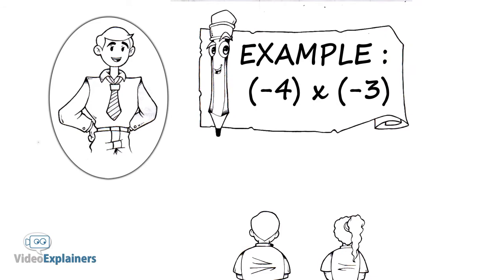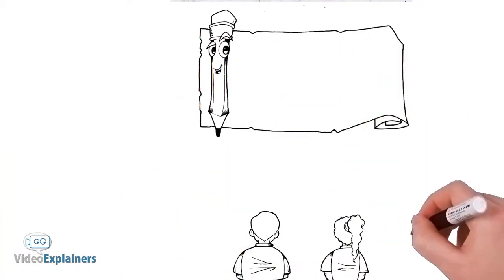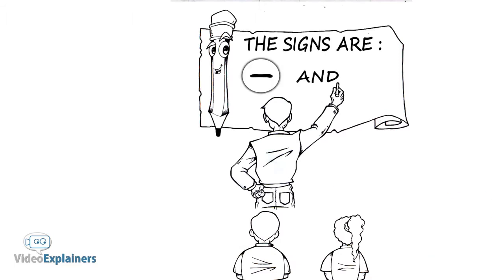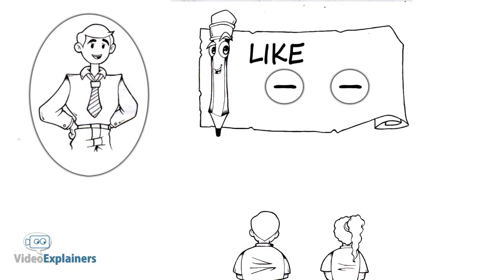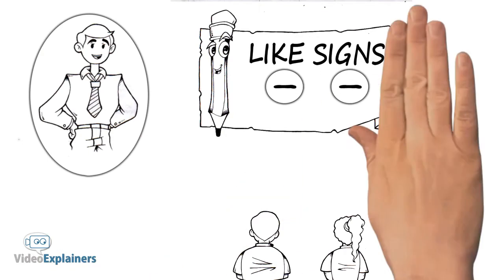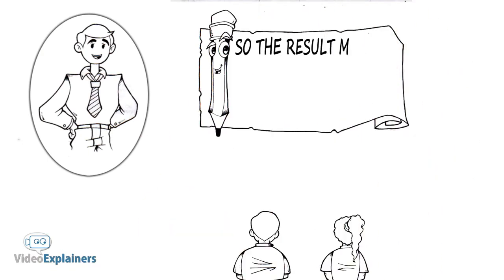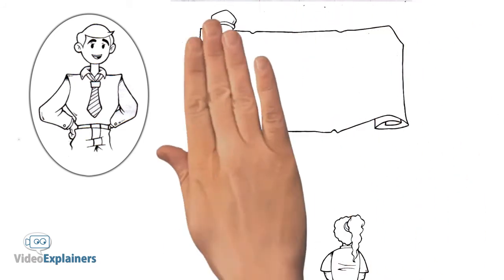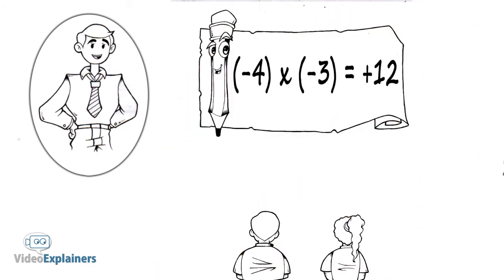Example: negative four times negative three. The signs are negative and negative. They are both negative, so they are like signs. Like each other. So the result must be positive. Negative four times negative three equals positive twelve.